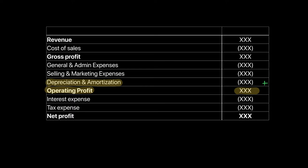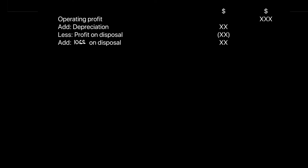You also need to adjust all gains and losses included in general and admin expenses. If there's a loss it should be added back since it's an expense, but if it's a gain it should be subtracted because it was added to operating profit. In the separate indirect method statement, you start with operating profit, add back depreciation, subtract gains, and add losses. The rule: any non-cash expense — add it back to increase profit; any non-cash income — subtract it from profit. These are the first three adjustments: depreciation, profits, and losses.